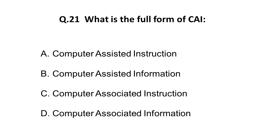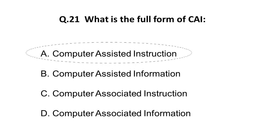Question 21: What is the full form of CAI in terms of computers? Options: A) Computer Assisted Instruction, B) Computer Assisted Information, C) Computer Associated Instruction, D) Computer Associated Information. The correct answer is A: Computer Assisted Instruction.